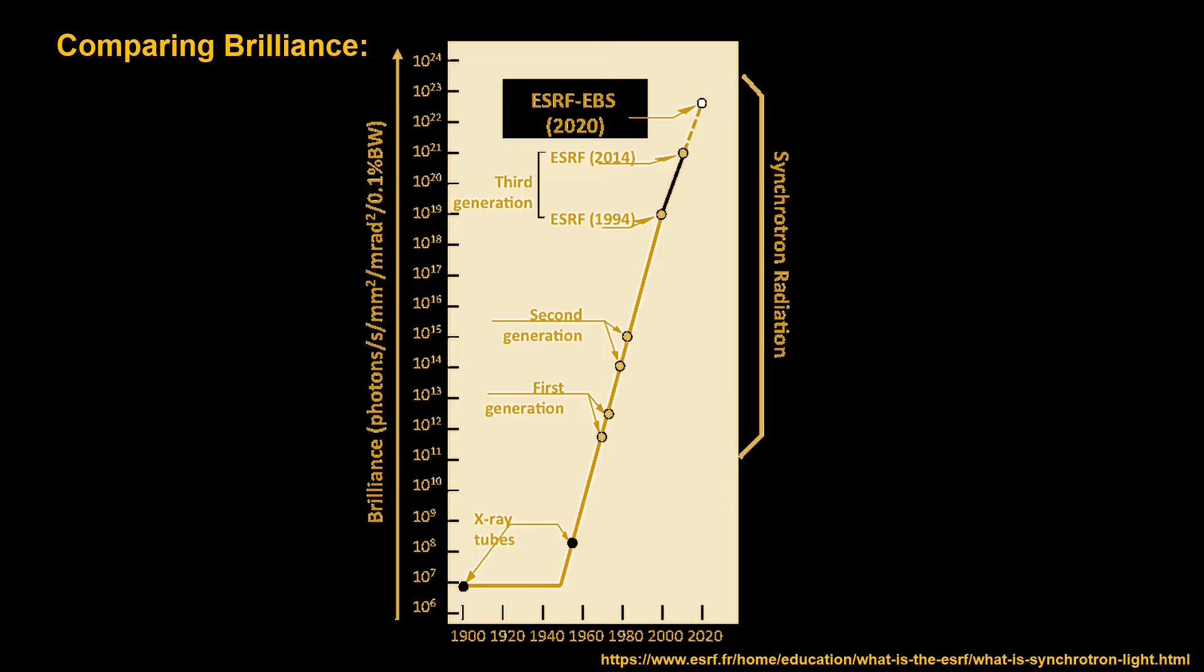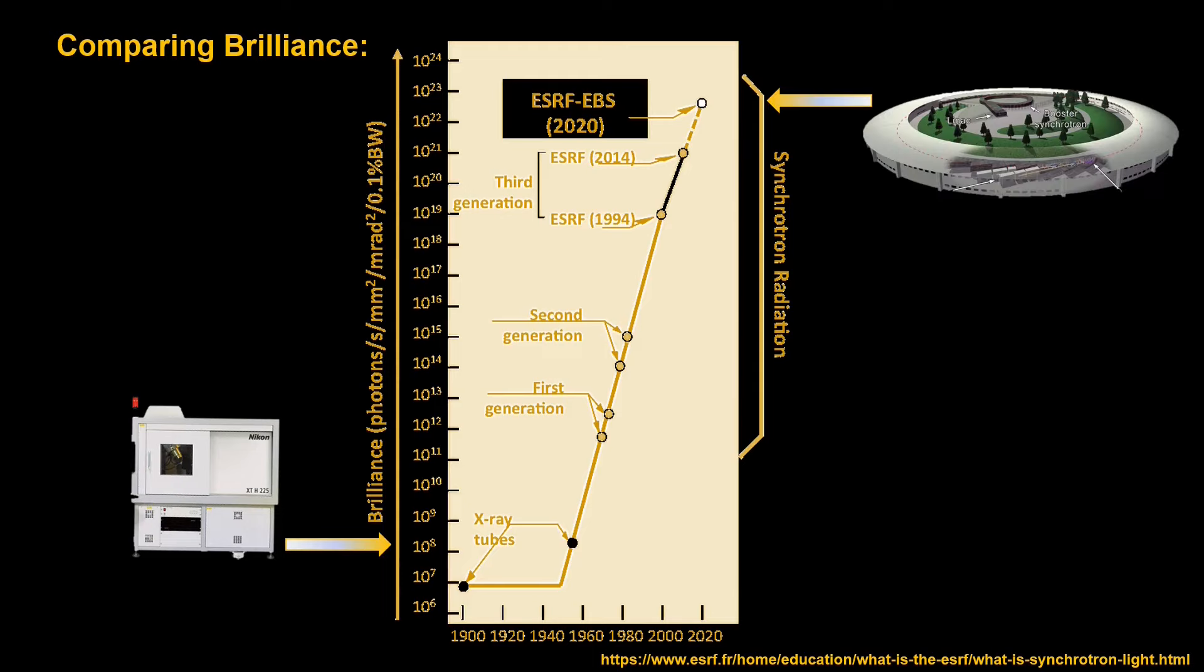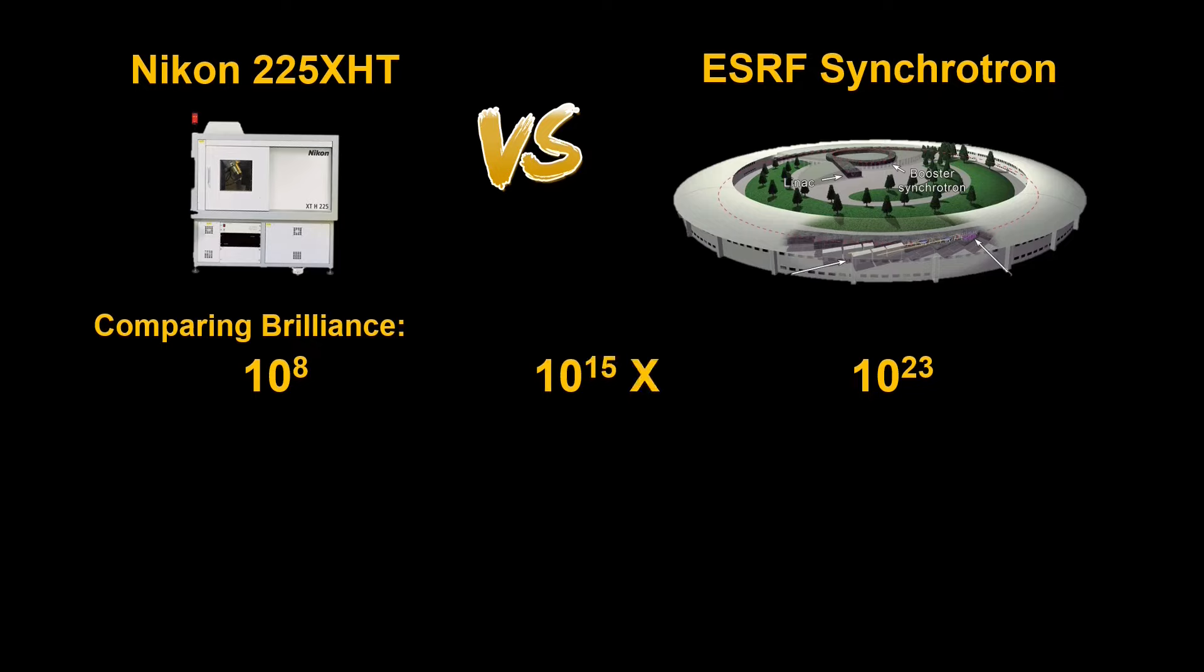The ESRF have provided this great graph here which plots the brilliance of different X-ray sources. The Nikon would fall down here in the X-ray tubes around 10 to the 8, as the ESRF is labeled here and it's at about 10 to the 23. So now we have a number that we can compare them in terms of brilliance. And so that is 10 to the 15 times greater. The synchrotron is 10 to the 15 times greater in brilliance than the Nikon. And that is one with 15 zeros or one quadrillion.